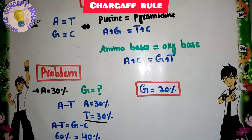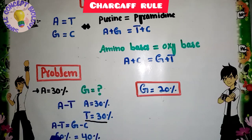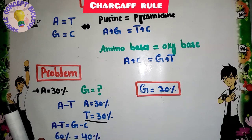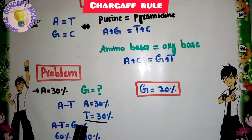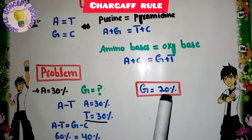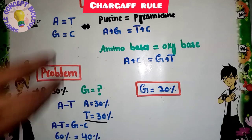Since adenine equals thymine and guanine equals cytosine, the sum of adenine and thymine is 60%. The remaining 40% is attributed to guanine and cytosine combined. Therefore, guanine contributes 20% and cytosine contributes 20%. So the concentration of guanine is 20%.